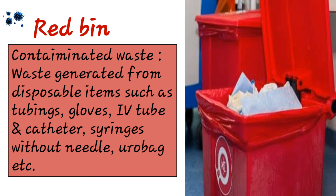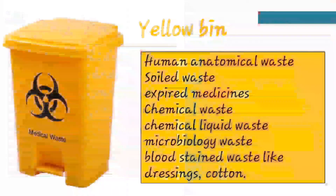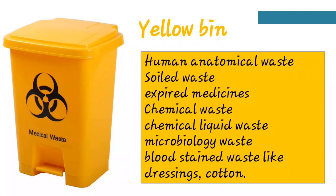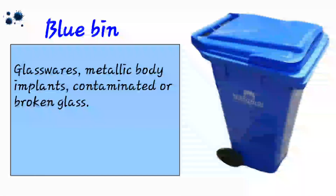In the yellow bin goes human anatomical waste, soiled waste, expired medicines, chemical waste, chemical liquid waste, microbiology waste, blood-stained waste, and dressings and cotton. So all blood-stained items and human anatomical waste go into the yellow bin. In the blue bin goes glassware, metallic body implants, and contaminated or broken glass — any glass that needs to be discarded goes into the blue bin.